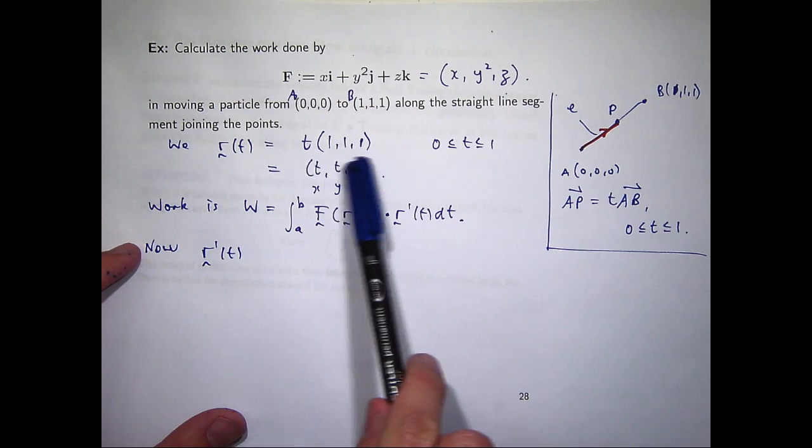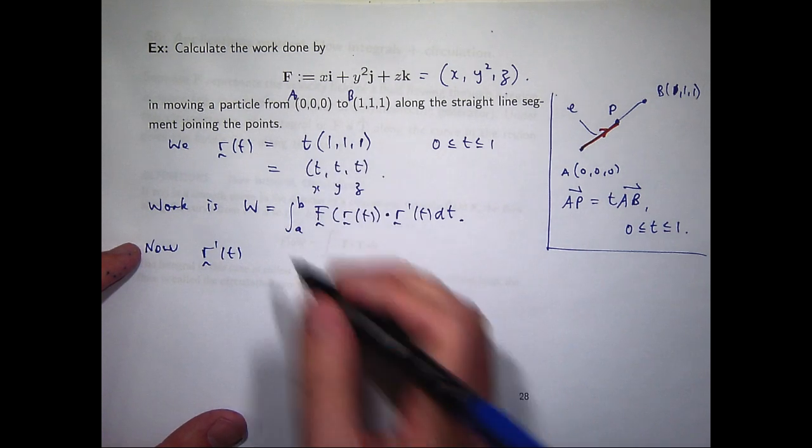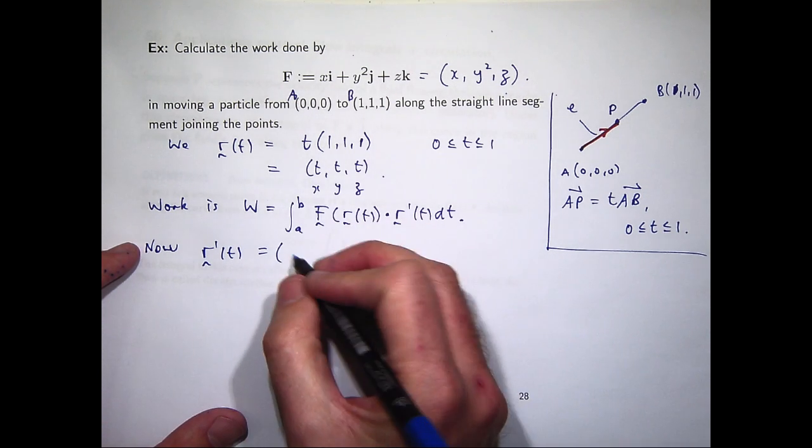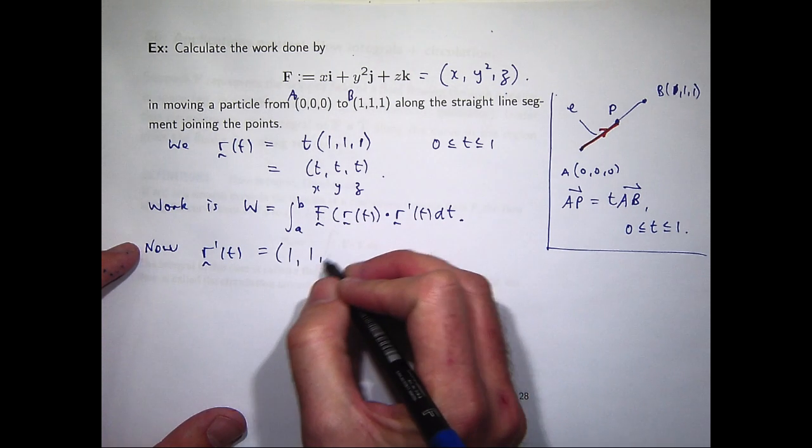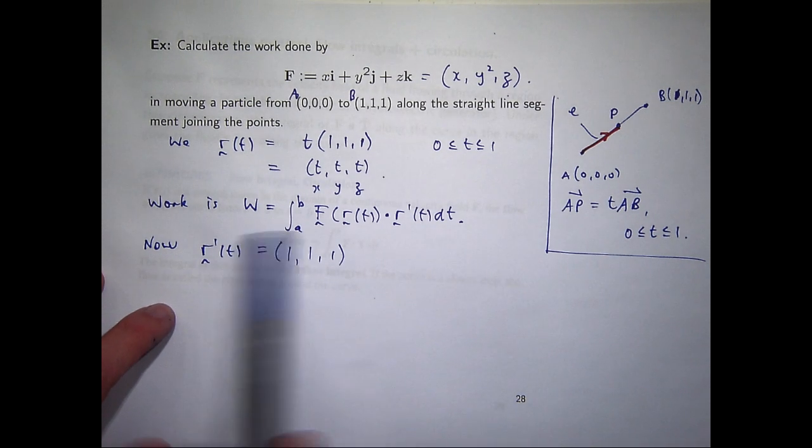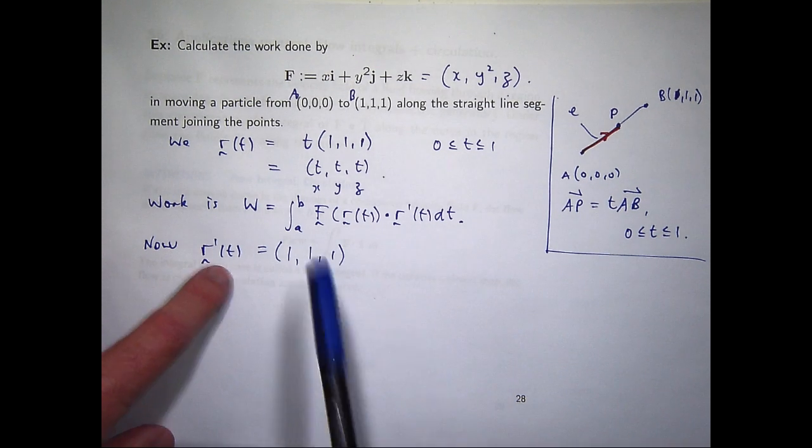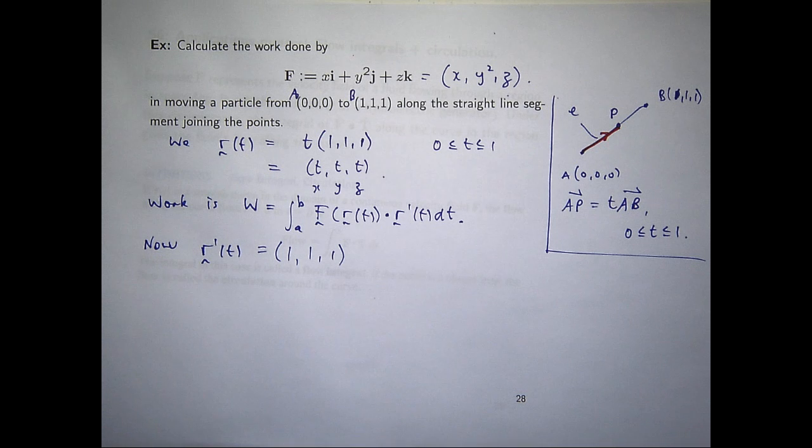So R dash, differentiate component-wise with respect to T. So the first derivative, the derivative of T is 1, and then 1, and then 1. So you can see here that this derivative is just a constant vector. It doesn't actually depend on T, but sometimes it will depend on T.